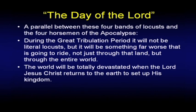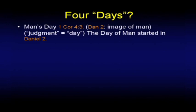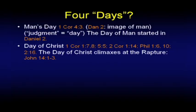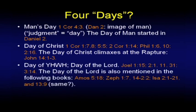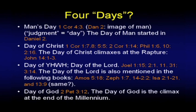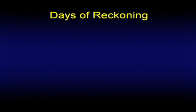The world will be totally devastated when the Lord Jesus Christ returns to set up his kingdom. He even warns us in Matthew 24 that unless those days were shortened, no flesh would be saved. So that's being interrupted by the return of Christ, which starts the day of the Lord. There are four days spoken of in Scripture: man's day, as alluded to in 1 Corinthians 4:3, portrayed by a metal image of man from Nebuchadnezzar to the end. The day of man started in Daniel 2 — I would argue it started in Genesis chapter 3. The day of Christ climaxes at the rapture. The day of Yod-Heh-Vav-Heh is also mentioned in Amos, Zephaniah, Isaiah, and elsewhere. And the day of God is the climax at the end of the millennium.